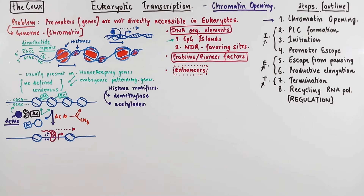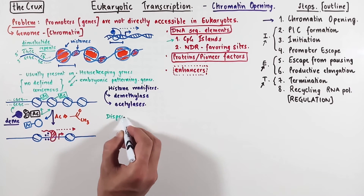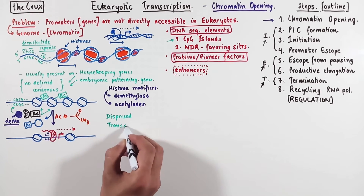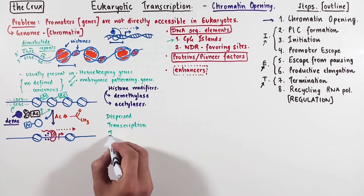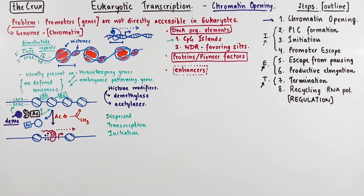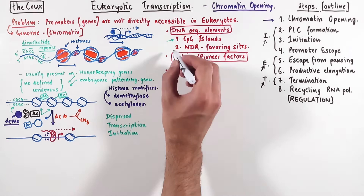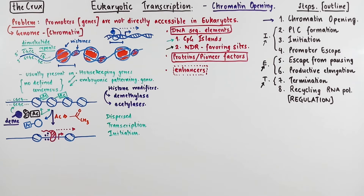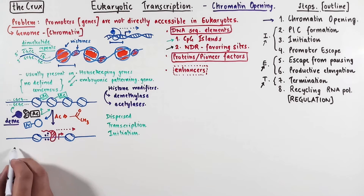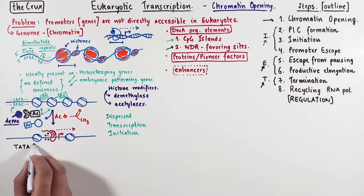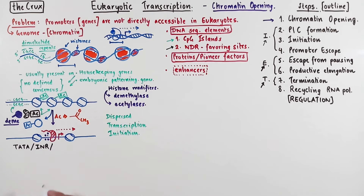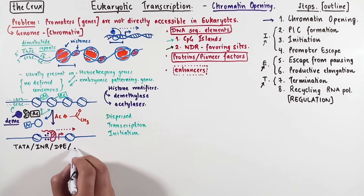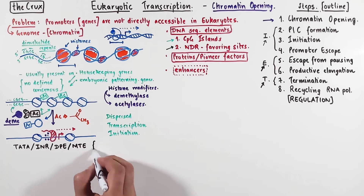A quick side note: notice we said that these promoters don't have a strong consensus. So if you recall from the promoter video, transcription starting from promoters that have CpG islands only will be a dispersed transcription initiation. The next set of DNA sequence elements are the nucleosome depleted region-favoring locations in the genome, and these are the TATA boxes, initiator, DPE, and MTE — the core promoters which we have seen in the promoter structure video.